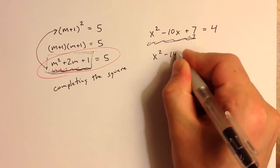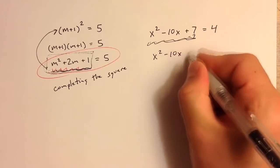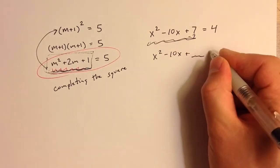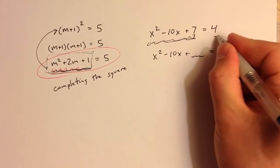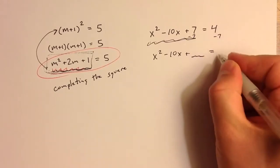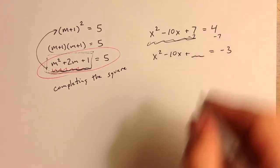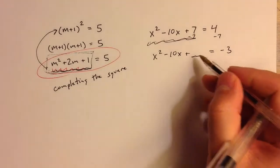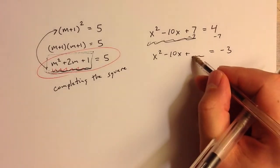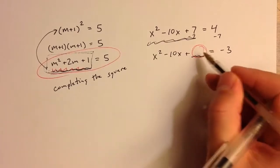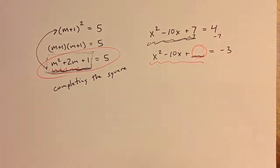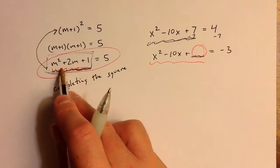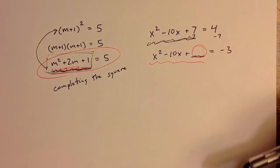I get x squared minus 10x, and then I'm going to put a little empty space there that I'm going to fill in a moment. On the other side, subtracting 7, I get negative 3. So now, what I want to think about is: what number could I put here? Is there a number that I could put here that would turn this into a perfect square trinomial, something like m squared plus 2m plus 1?